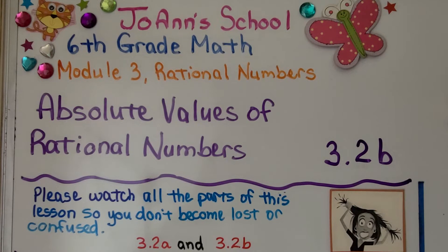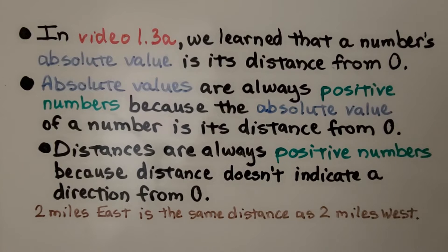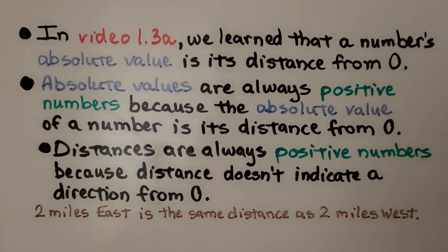We're now at 3.2b, which is the second part of 3.2. We're going to learn about absolute values of rational numbers. In video 1.3a, we learned that a number's absolute value is its distance from zero. Absolute values are always positive numbers because the absolute value of a number is its distance from zero, and distances are always positive numbers because distance doesn't indicate a direction from zero.